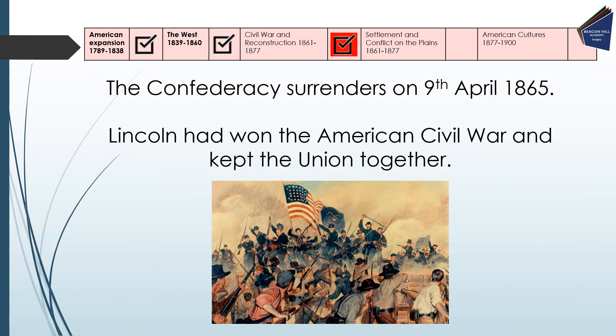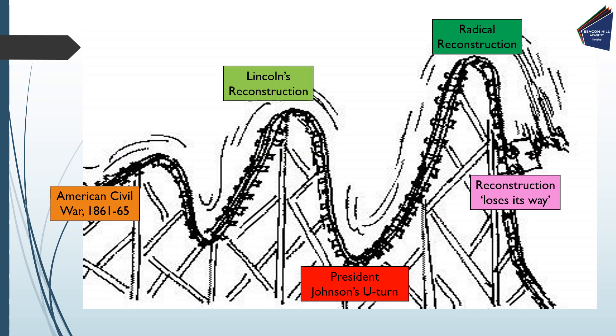A key date to remember is the 9th of April 1865 — this is when the Confederacy surrendered. As a result, the Union was kept together: North and South were still united. Lincoln had won the American Civil War and managed to keep the Union together. They would now focus on reconstruction — the process of rebuilding the lives of African-Americans after years of embedded racism and discrimination.